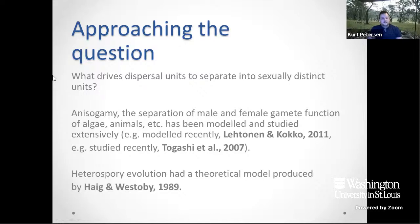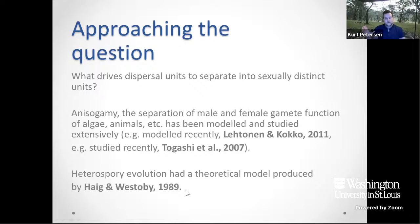Now we know a little about the history, we can approach the question: what drives dispersal units to separate into sexually distinct units initially? The approach we took was to look for potential homologies in the literature from other systems. Anisogamy is potentially a really good example — anisogamy is the sexual size differentiation of gametes, which occurs in algae, animals, etc., and has been modeled and studied extensively. Heterospory itself has had a theoretical model produced by Haig and Westoby in 1989, which suggests spores increased through time to a certain size threshold until it was advantageous to split into two size-differentiated and sexually distinct groupings.